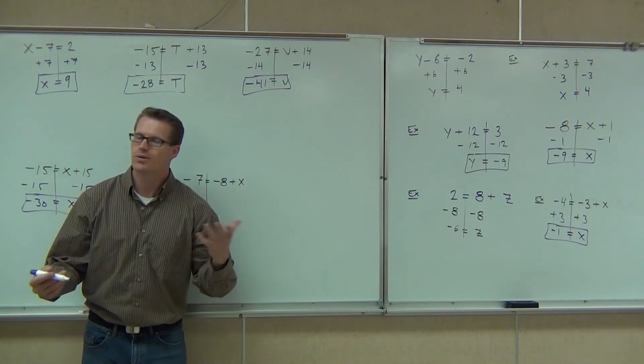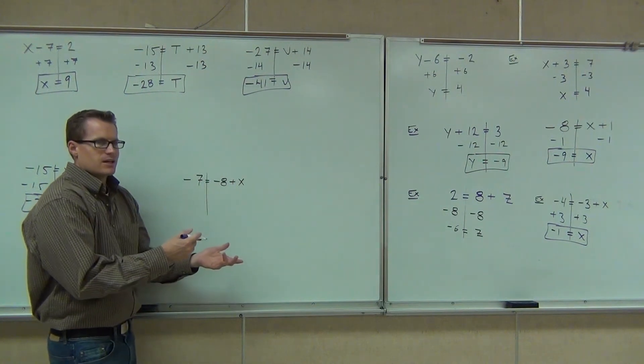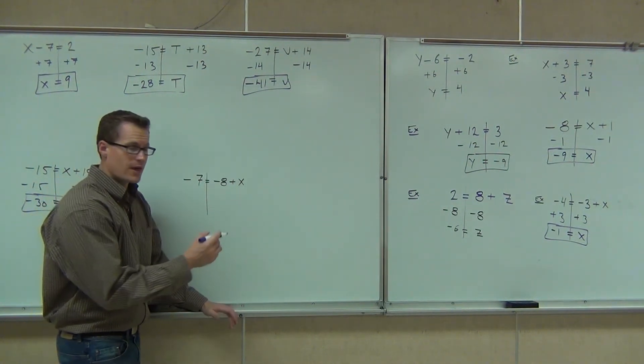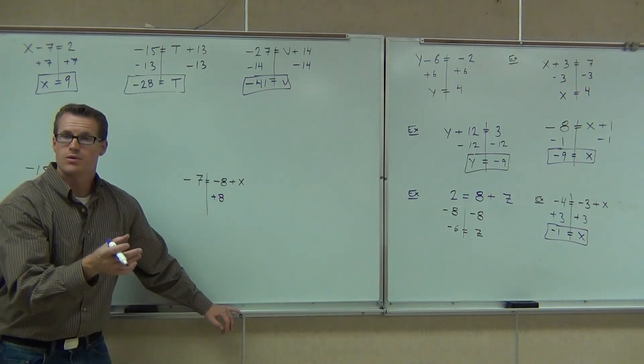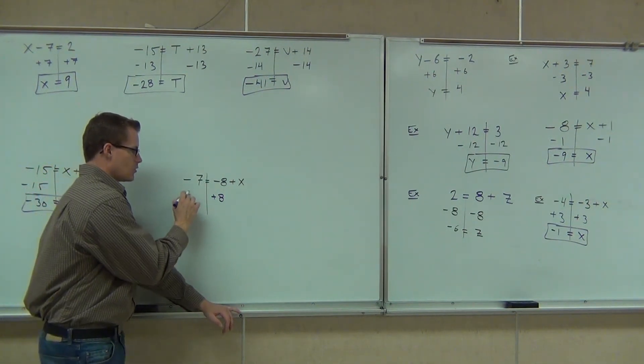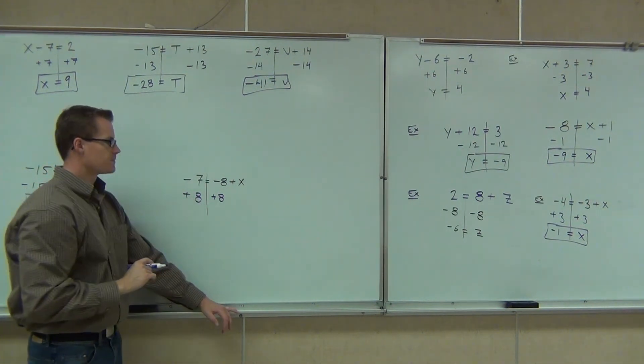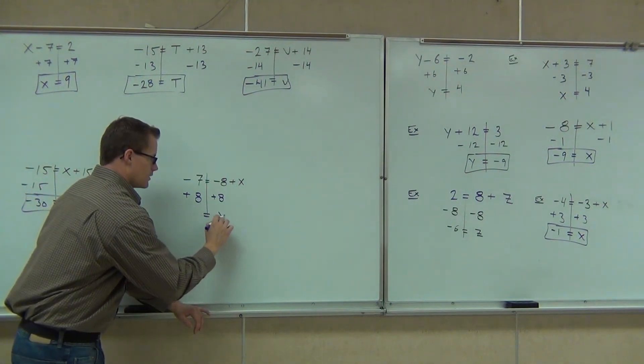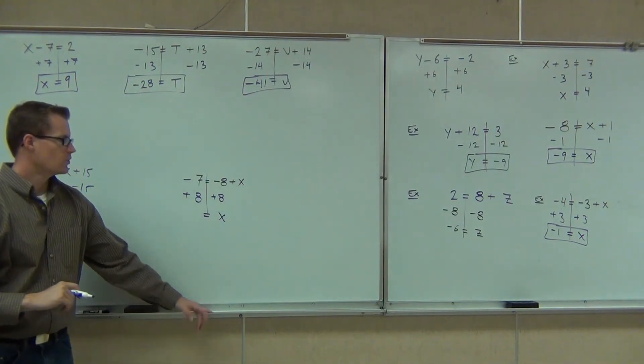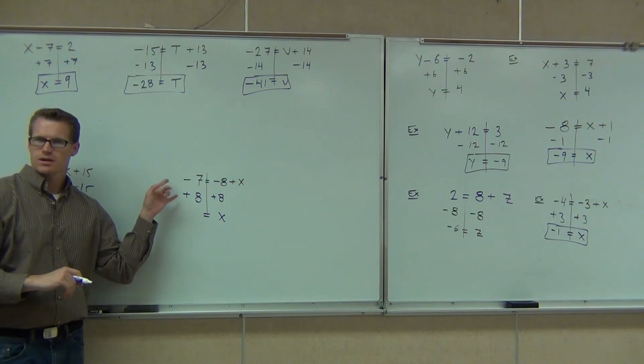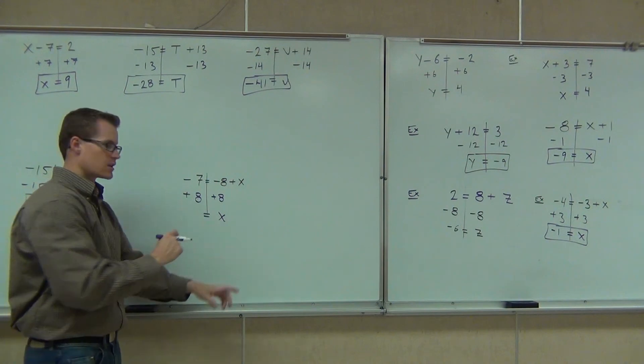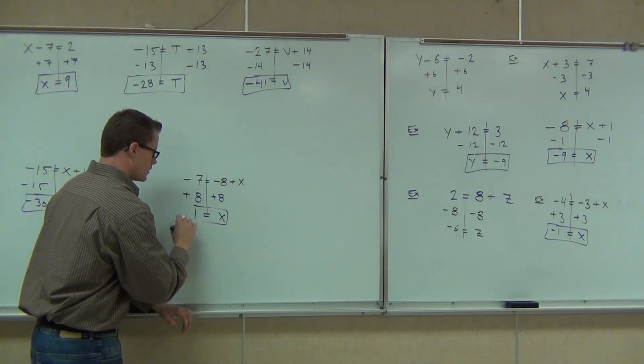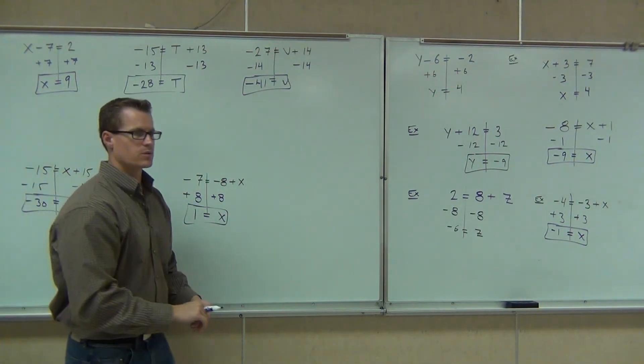Again, you could think of it as subtracting negative 8 from both sides. You could get rid of it that way. But on the other hand, we can just say, okay, the opposite of negative 8 is positive 8. Let's go ahead and add that. Because when we add the opposite of a number, it goes to zero. So we add 8. We make sure we do that to both sides. We go addition rule over here. How much are we going to get? One. Positive. Yeah. Because they have different signs. We'll subtract, but we keep the sign of the bigger number.